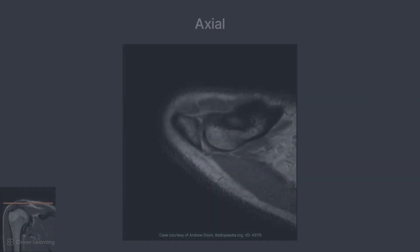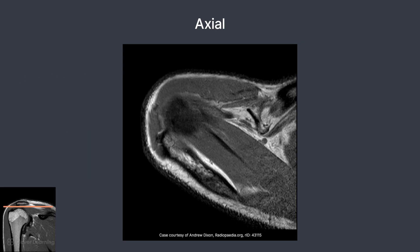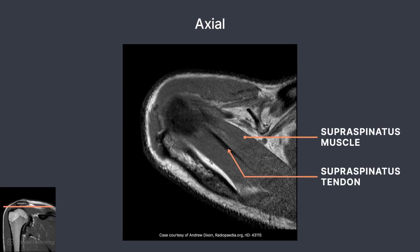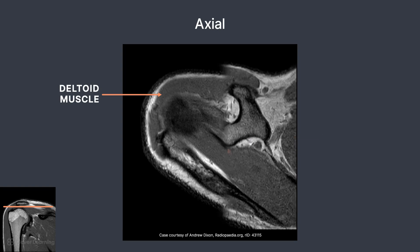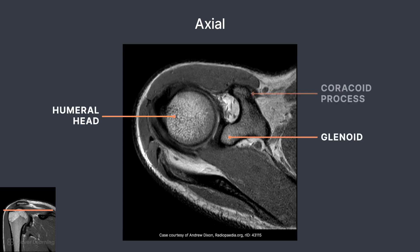Starting from a superior position, the acromioclavicular joint is visible. This is made up of the lateral aspect of the clavicle connecting to the acromion. Moving inferiorly, the supraspinatus muscle and tendon are demonstrated well. The large deltoid muscle is demonstrated wrapping around the upper humerus. Important bony structures on this image include the round humeral head, the glenoid, and the coracoid process projecting anteriorly.